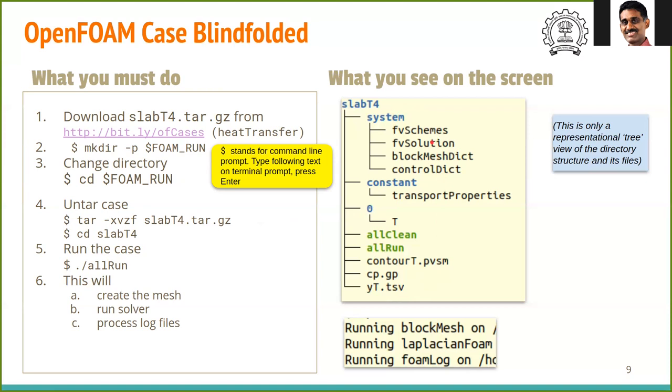The set of files that gets created looks like this. In the following slides, the right hand side column shows a part of what will appear on the screen as you execute the actions given on the left hand side. This directory contains two script files: Allrun and Allclean. To run OpenFOAM on this case, type ./Allrun.